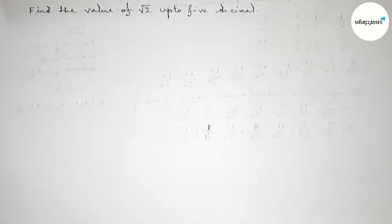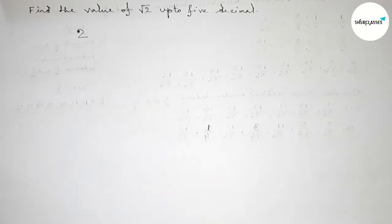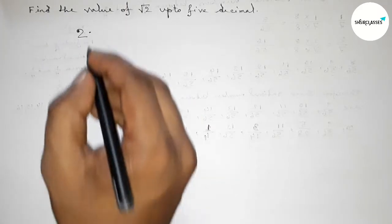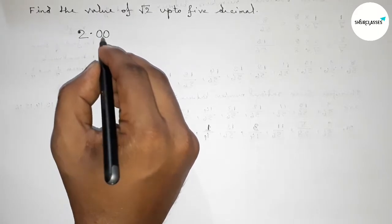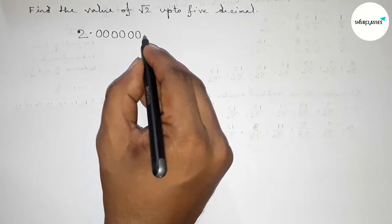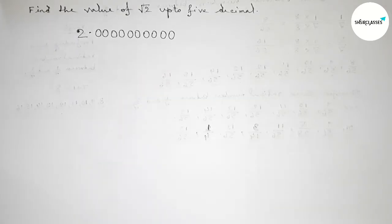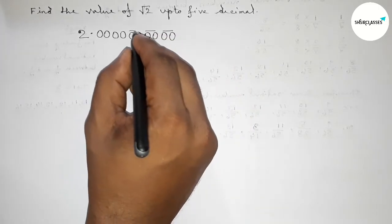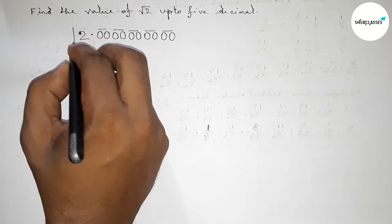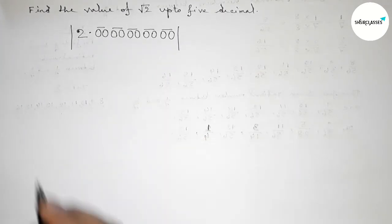First of all, write down the number 2. Now take a decimal point, then write down 10 zeros for five decimal places. Make them as pairs of zeros — taking two zeros as a pair — so we get five pairs of zeros. Now draw a division line on both sides.